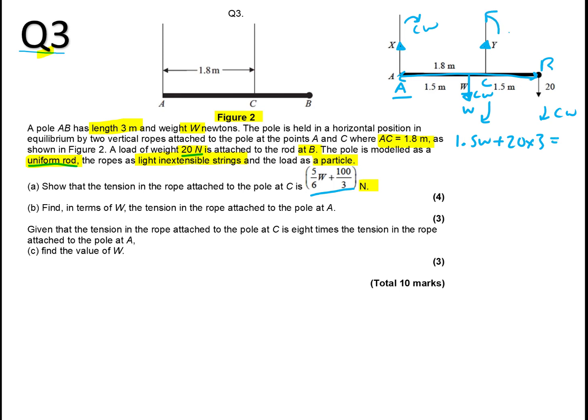First thing we've got is 1.5W, the clockwise moment, plus 20. This is a 20. And what's the distance from A to 3 meters? That's 20 times 3 equals, this is the anti-clockwise. So, it's got to equal that because it's in equilibrium. So, we know that is 1.8. That's going to equal 1.8Y. If we divide out by 1.8, you're going to get Y equals 5/6W plus 100/3. And then you've done that quite easily done. And those are all your method marks earned with the diagram.